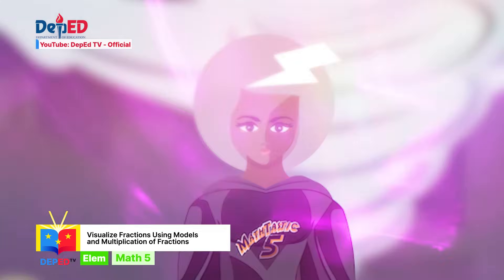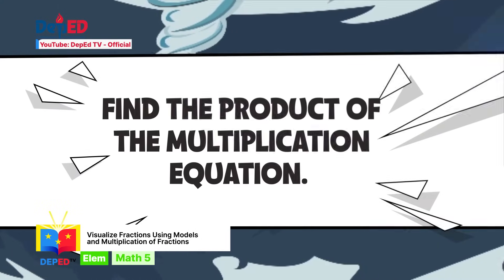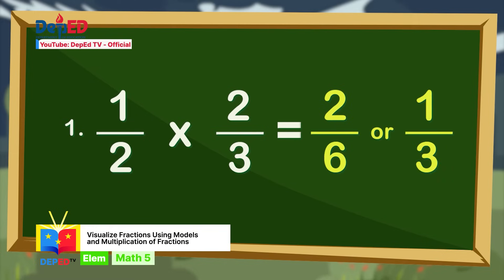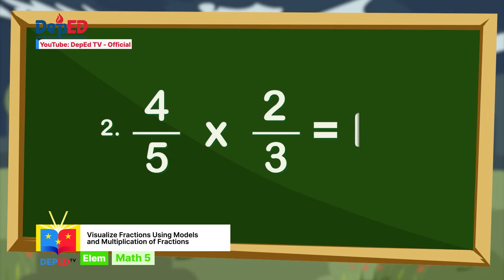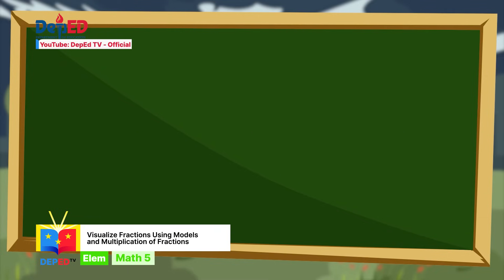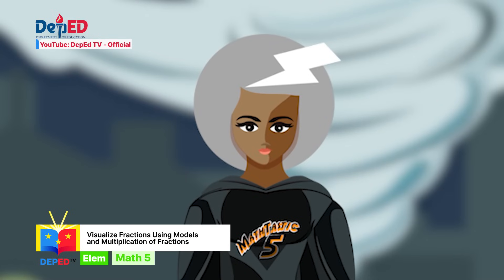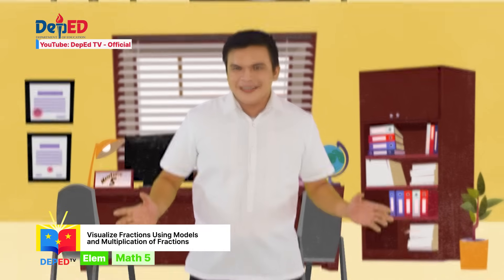Math heroes, now find the product of the multiplication equations. Number one: one-half times two-thirds equals n — the answer is two-sixths or one-third. Number two: four-fifths times two-thirds equals n. Number three: three-fourths times three-fifths equals n. We will see each other in your next quest, math heroes!